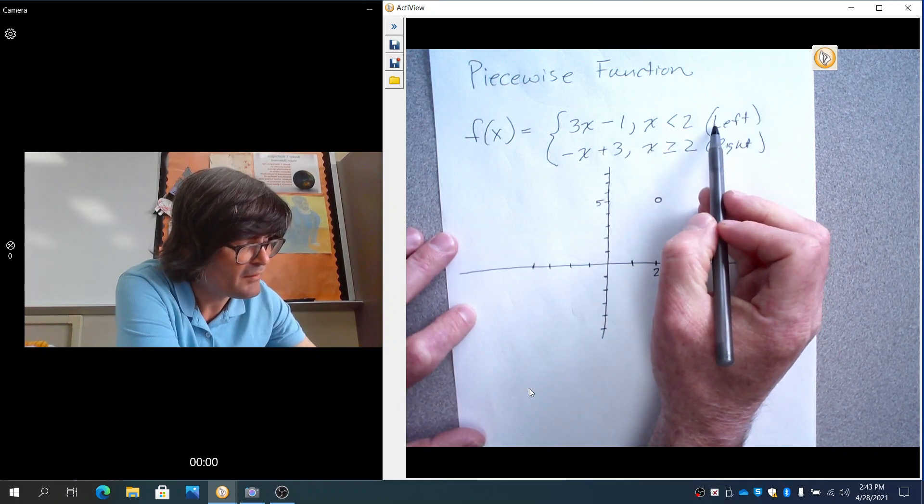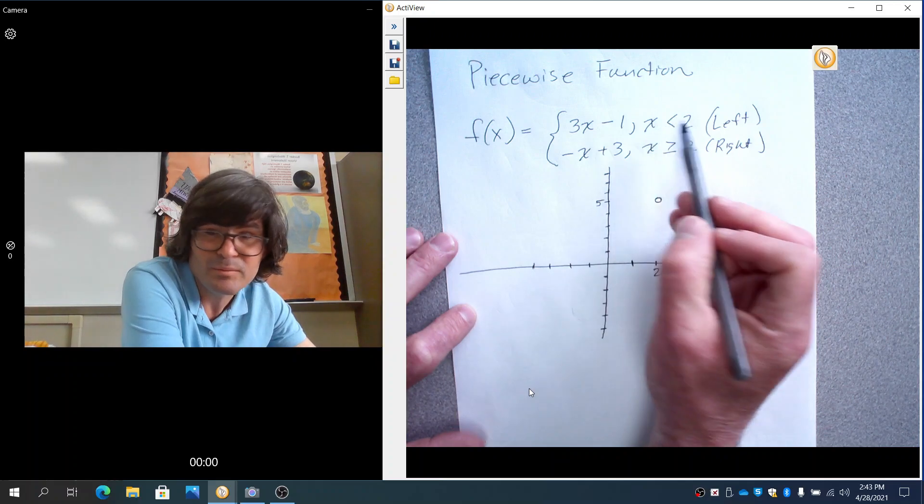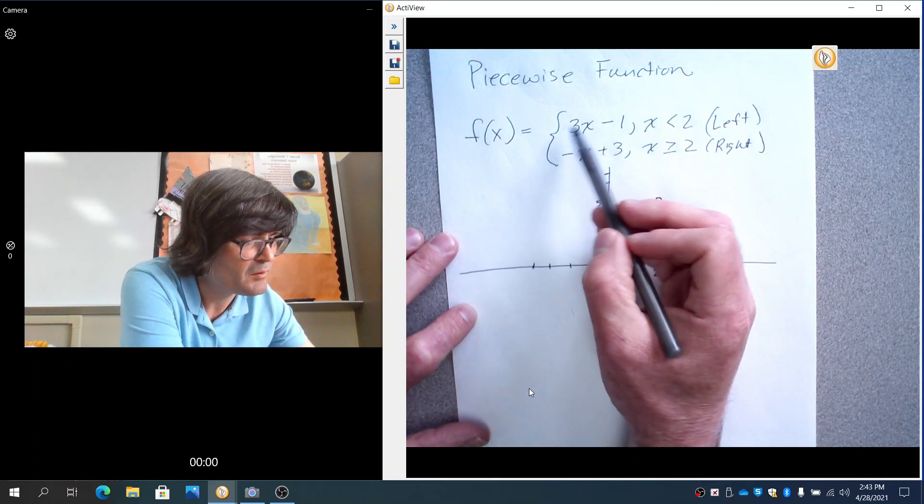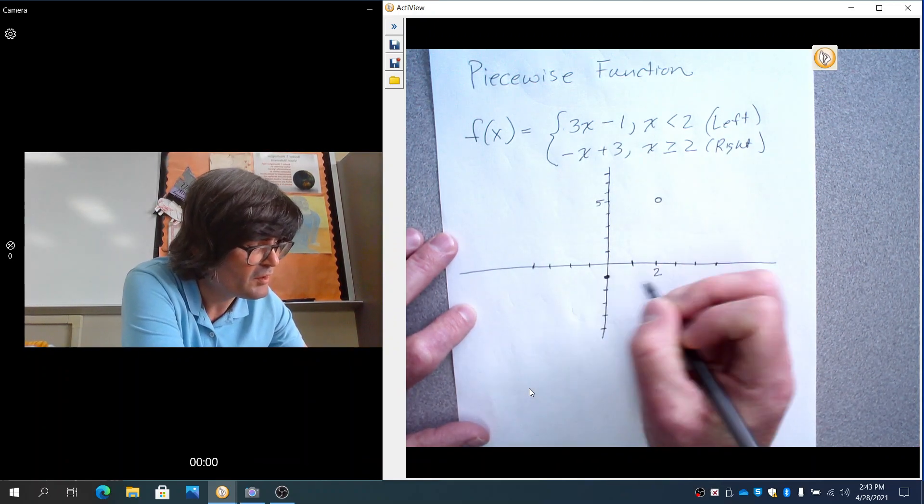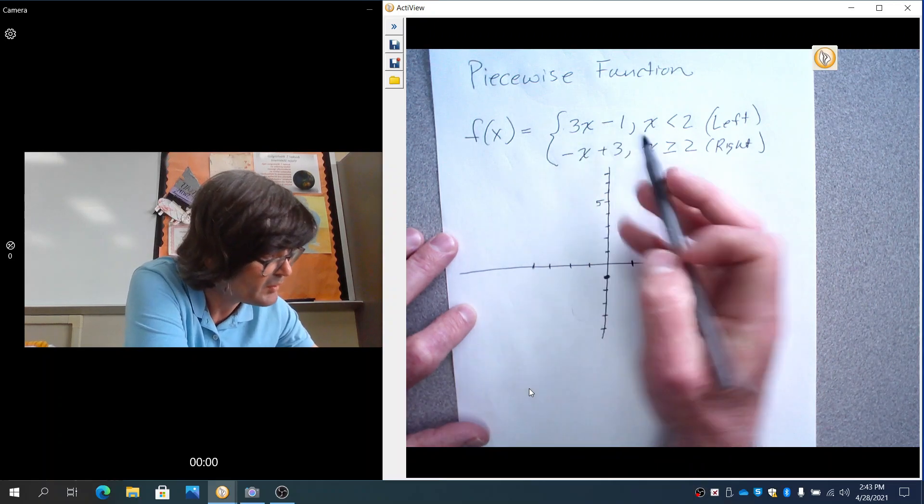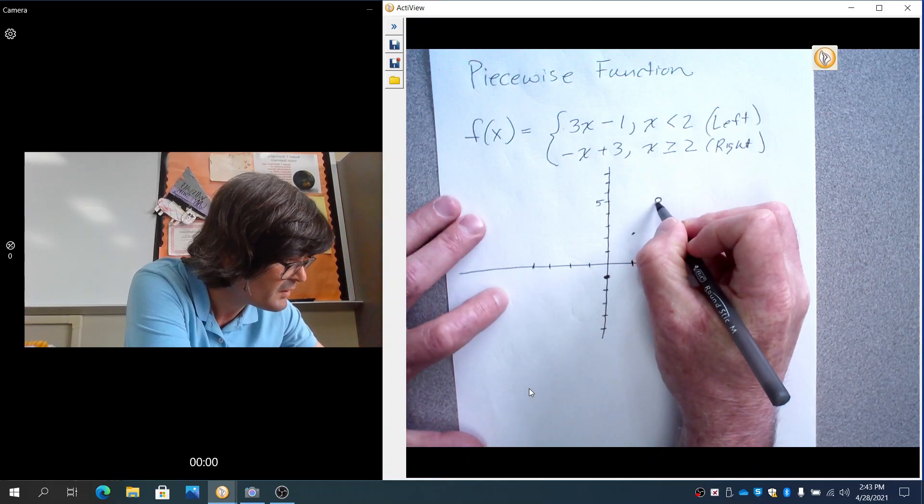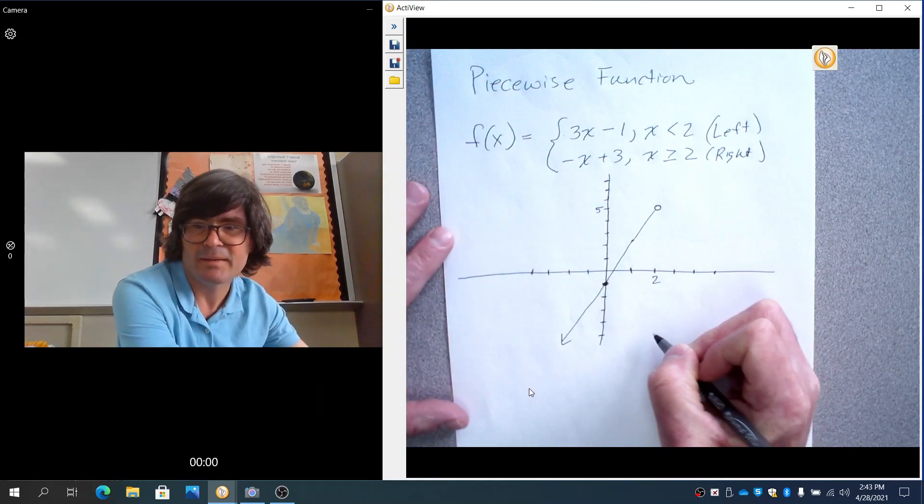From here, I'm going to pick a point on the left. You can pick any point you want that's left of 2. Maybe I'll just pick 0. 3 times 0 minus 1 would be right here. You could have picked 1. 3 times 1 is 3. Minus 1 would be 2. You can see that they all kind of fall on this line. And so the left line looks like that.